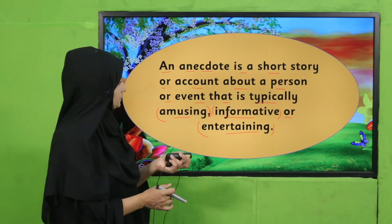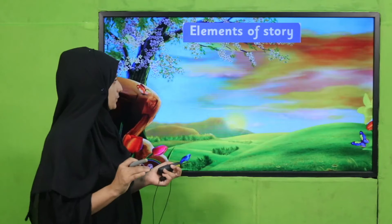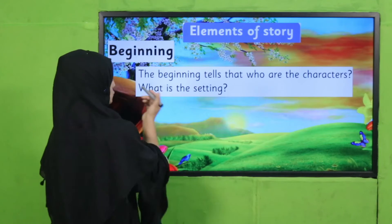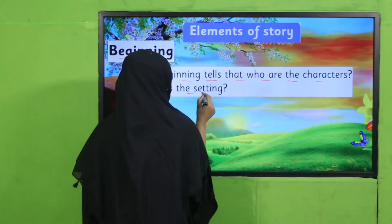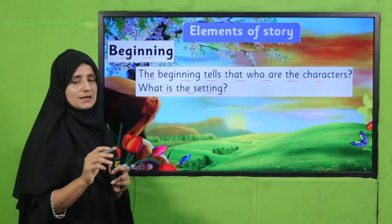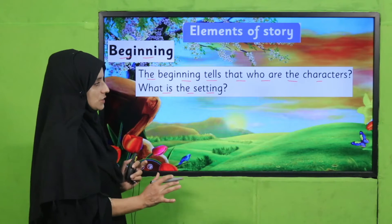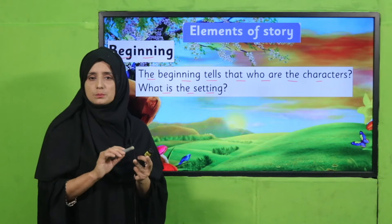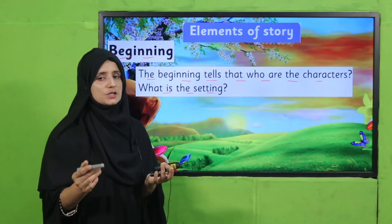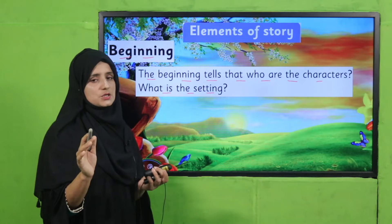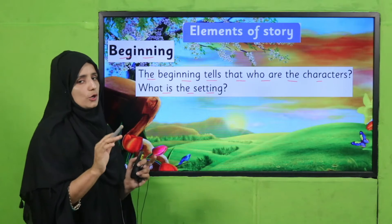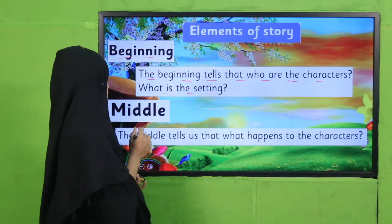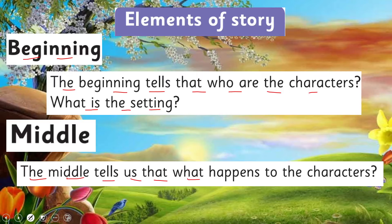Now, the elements of a story. Number one is the Beginning. The beginning tells us who the characters are and what the setting is. Characters can be animals, words, persons, or imaginary figures — an imaginary figure can be the main role in a story. Next is the Middle. The middle tells us what happens to the characters.